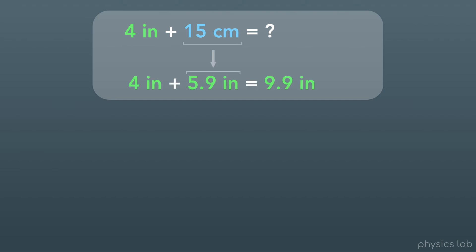For example, if we wanted to add two lengths together. What is 4 inches plus 15 centimeters? Well, the answer is probably most useful if we give it in terms of a single unit. So we have two options here. We could convert the 15 centimeters into inches, and get 5.9 inches.